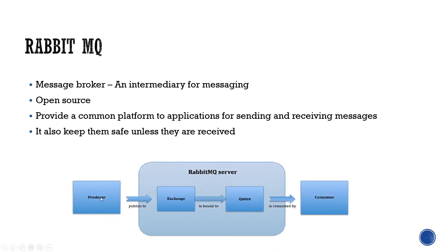To understand RabbitMQ through a diagram: on the left side is a producer and on the rightmost side is a consumer. The message sent between producer and consumer is managed by the RabbitMQ server. It publishes to an exchange, which is bounded by a queue. Messages live in that queue until consumed by the consumer. That's how a RabbitMQ server works in your application.